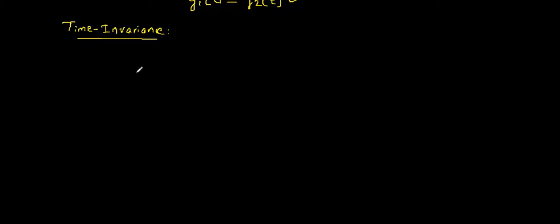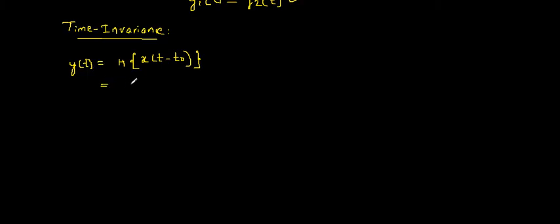To test this, I first consider a shift in the input. The original input is x(t), so the shifted input is x(t − t₀). Giving this to system operator h, the system replaces t with 2t, so the output becomes x(2t − t₀) — everything else remains as it is. So the output is y(t) = x(2t − t₀) for a shifted input.